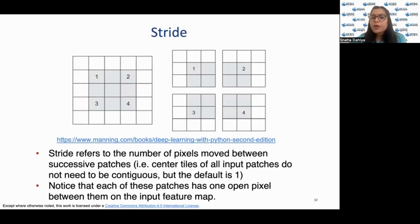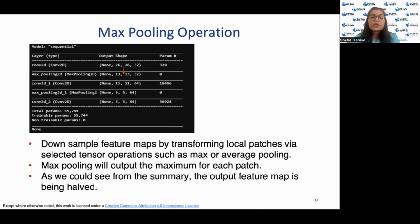Next we'll talk about the max pooling operation. Max pooling operation is basically used to down sample feature maps by transforming local patches. Max pooling basically outputs the maximum of each patch. Generally, max pooling will use a 2 by 2 patch with a stride of 2. These 2 by 2 patches will be transformed via hard-coded max tensor operation instead of using a kernel as in step 3. As you can see from the model summary here, the output feature map is being halved from 26 to 13.